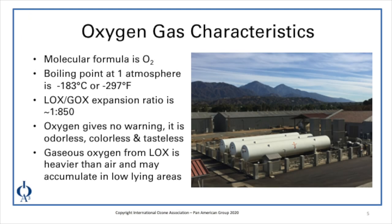The oxygen gas characteristics include that the molecular formula of oxygen is O2. It has a boiling point at one atmosphere of negative 183 degrees C or negative 297 degrees Fahrenheit. The liquid oxygen to gaseous oxygen expansion ratio is approximately 1 to 850. Oxygen gives no warning in that it is odorless, colorless, and tasteless. Gaseous oxygen from liquid oxygen is heavier than air and may accumulate in low-lying areas.